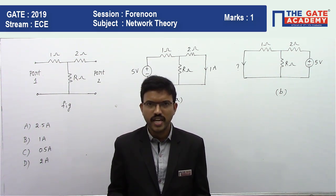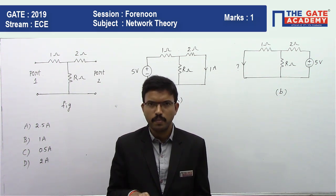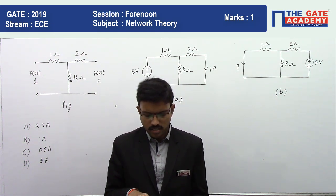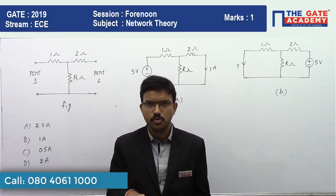Now if an excitation of 5 volt is applied at port 2 and port 1 is short circuited as shown in figure B, what is the current through the short circuit at port 1?